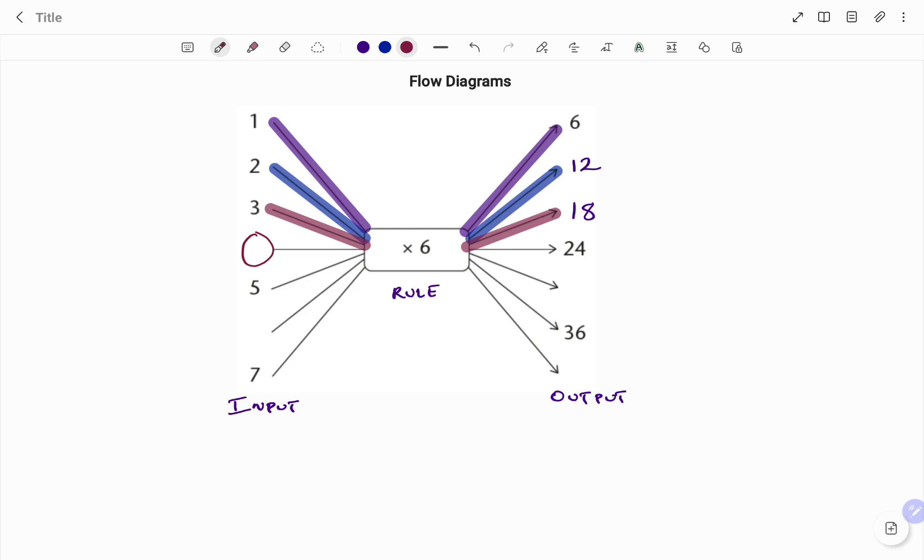To find the value of this missing input we're going to do what we call the inverse rule. Now the rule is multiplication as shown. The inverse of multiplication is division, so therefore if I'm going backwards starting with 24...